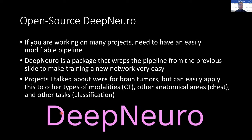If you're working on many projects, having a modular, user-friendly pipeline package will make your life a lot easier. In our lab, we have an in-house package called Deep Neuro, which does what I just explained. By using this package, we can easily train models not only for brain tumors but also for other anatomical areas such as the chest, other modalities such as CT, and other tasks such as classification, with relatively little hassle.